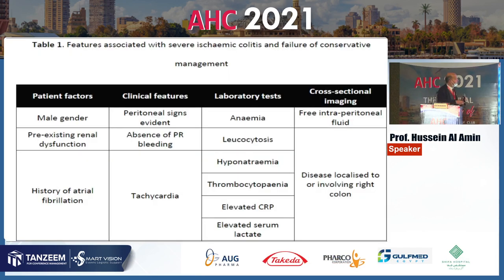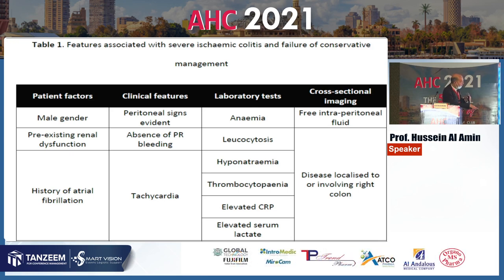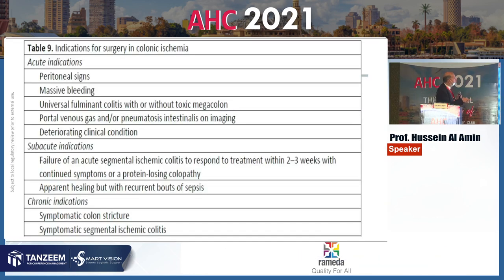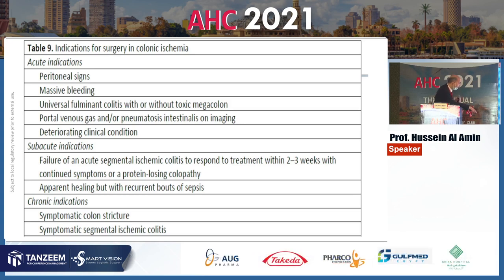Features associated with severe ischemic colitis include male gender, pre-existing renal dysfunction, and history of atrial fibrillation. Laboratory and cross-sectional imaging features — including pneumatosis intestinalis — also indicate severity. Surgical indications include peritoneal signs, massive bleeding, universal or permanent colitis, portal vein gas, pneumatosis intestinalis, and deteriorating clinical condition. Sub-acute and chronic indications include symptomatic colonic stricture and symptomatic segmental ischemic colitis.